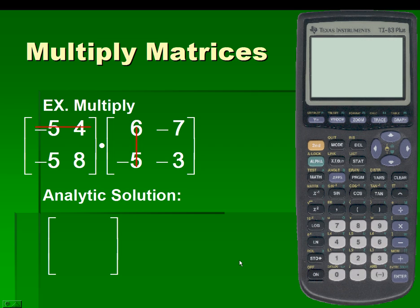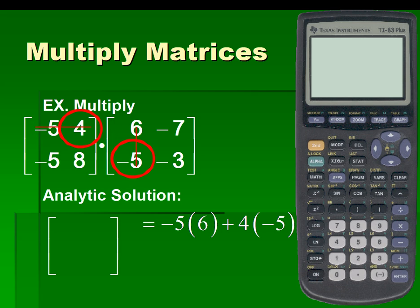For example, we will sum the product of elements of matrix 1, row 1, and matrix 2, column 1, for a result of negative 50.